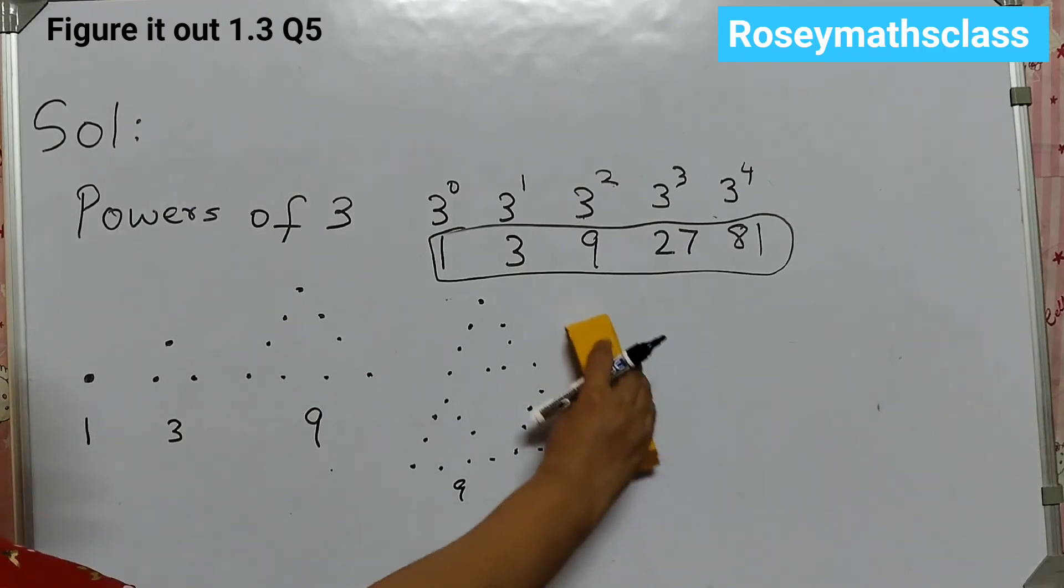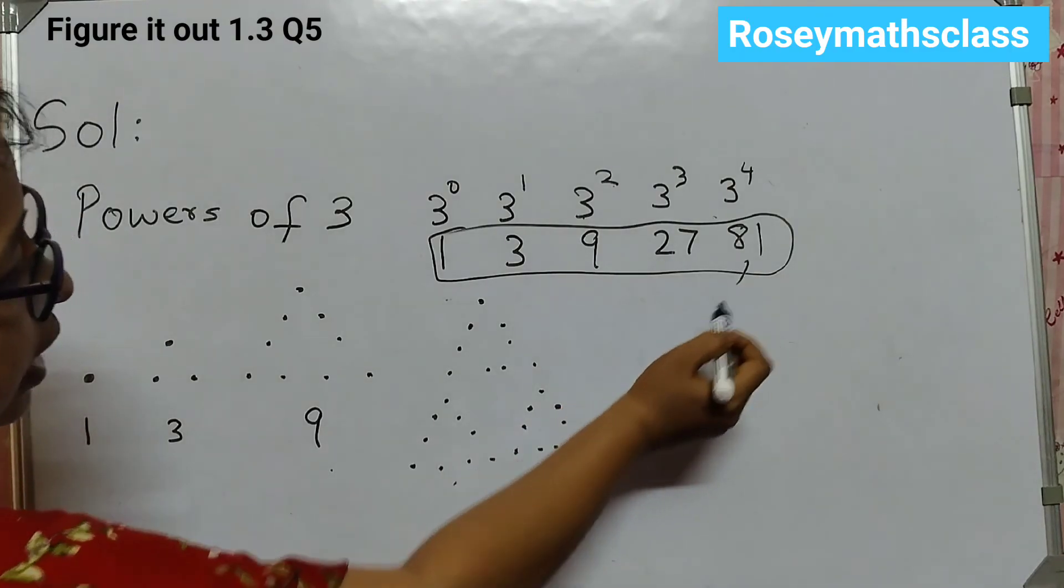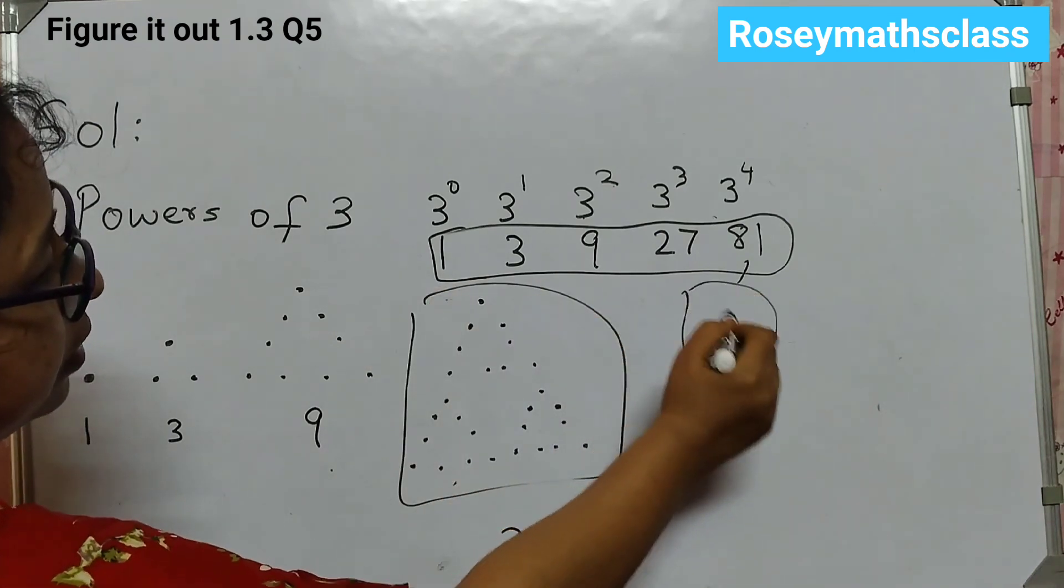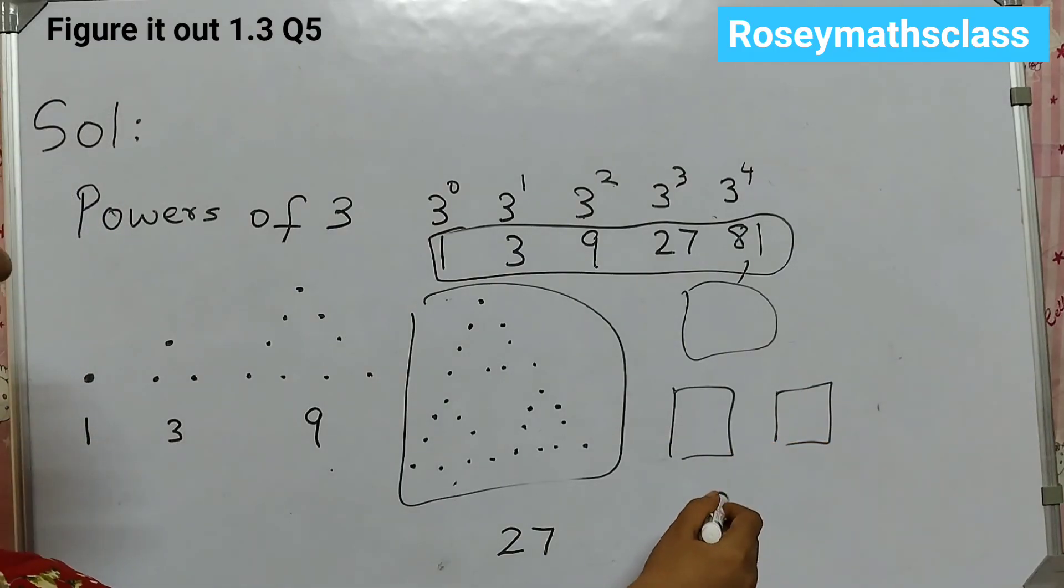So this way we can show 27 dots. Now if you want to show 81. If you want to show 81. Then you have to draw like this 3 times. 1 time. 2 times. And 3 times. Then you will get 81.